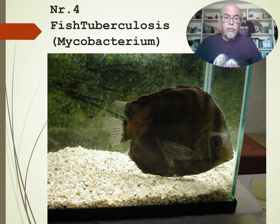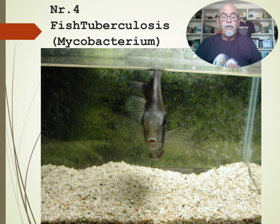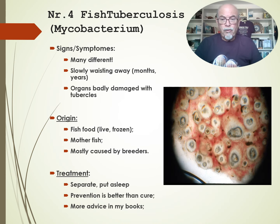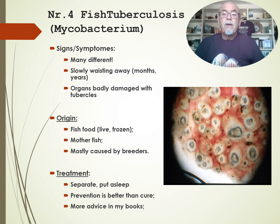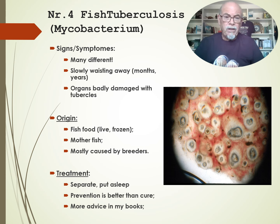Fish tuberculosis — number four — bacteria, mycobacterium. You see the skinny fish, darkening fish, wasting away, getting very skinny. After many months it slowly dies — it takes a long time before the fish dies. Watch for the symptoms: particularly the darkening, losing of the color. Sometimes there's a big belly, but that's very rare. It's usually a skinny fish, slowly wasting away, dark, sitting in the edges, not eating well.